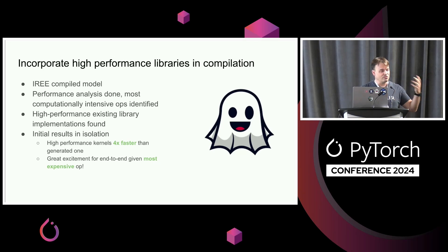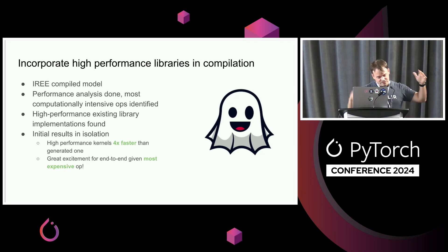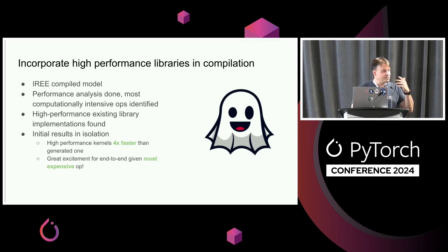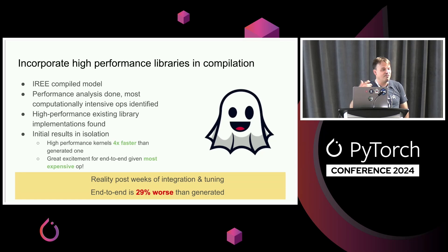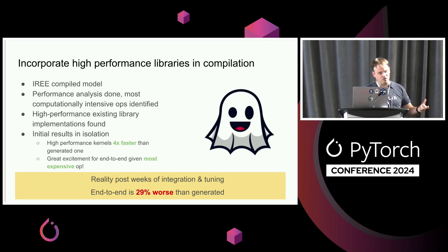One example: we had folks looking at a compiled module. They compiled a model down, did a performance analysis, did their histograms, identified the most computationally intensive ops, and found a high-performance library that had those exact same ops. Folks got quite excited because the kernels were actually 4x faster than the generated ones. So it's like, this is awesome — 4x higher performance kernels, we can just plug it in, it's the most expensive ops, this should go great. Except, after a couple of weeks of integration and tuning, the end-to-end result was actually 29% worse.